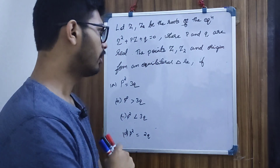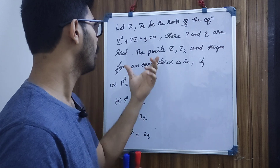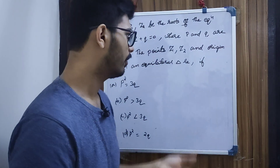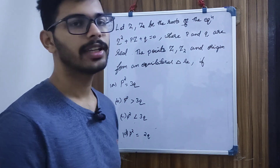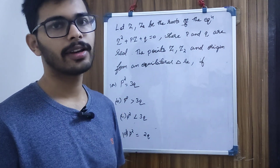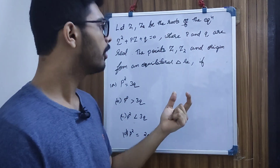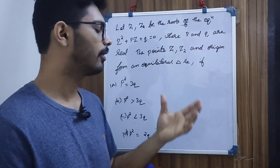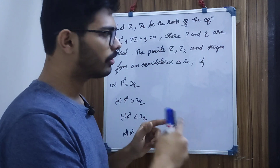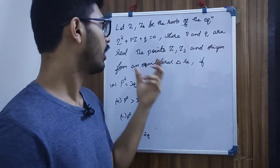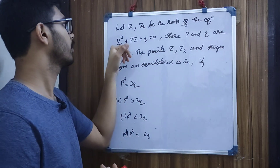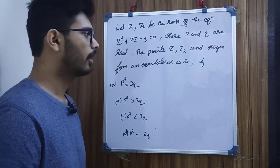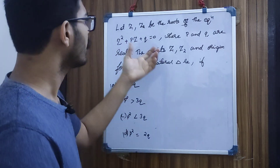Let's take a look at this question. This is the geometry of the complex number. The complex number is x plus iy. There are x-coordinates and y-coordinates — points in the plane. There is a geometric shape, a triangle or a square. There is a quadratic equation.